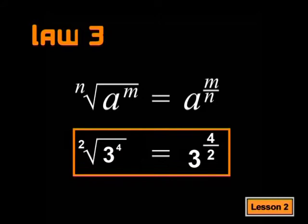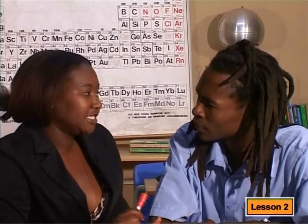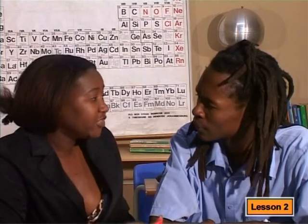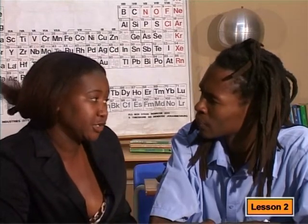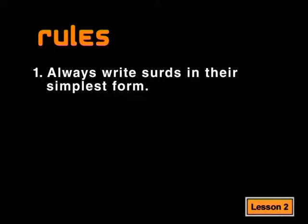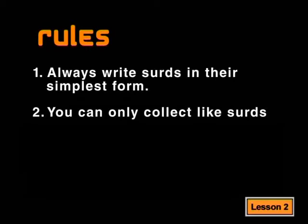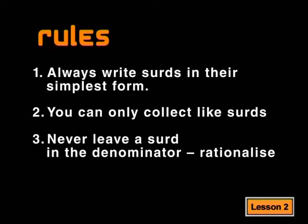I think I can remember those. Let's try some examples. All right. But before we do that, there are a few things you need to keep in mind when dealing with surds. Firstly, you must always manipulate surds into their simplest form. In other words, you must write them in their prime factor form. Secondly, you can only collect like surds. And lastly, you should never leave a surd in the denominator. You must always rationalize the denominator.